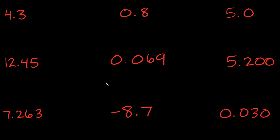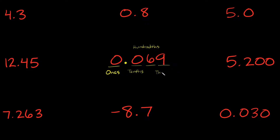The first thing you need to understand is place value. To refresh your memory, I'll use this example in the middle of the screen. Here's your decimal point. To the left of it is the ones place. The first place value to the right is the tenths place, then the hundredths place, and the third spot is the thousandths place. Whenever you see a decimal, you read it by saying the word 'and.'